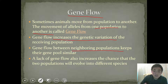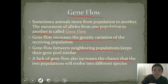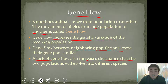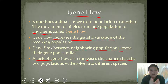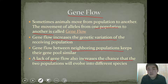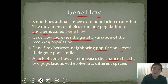A lack of gene flow increases the chances that two populations will evolve into different species. If there was no gene flow and no change even slightly in genetic variation, because of evolution and natural selection, those two populations are eventually just going to continue to diverge and may even eventually become two different species. We'll talk about speciation and different isolation events at the end of this presentation.